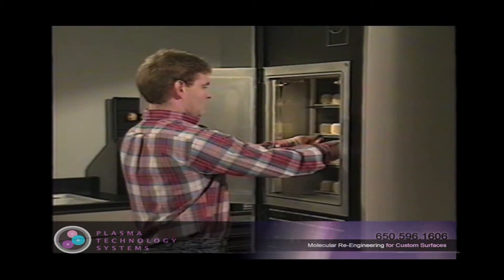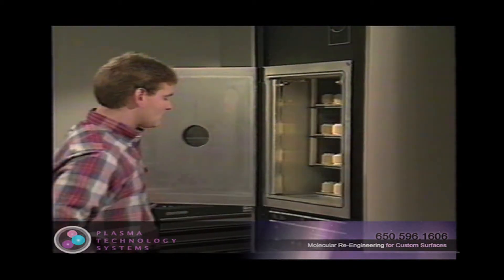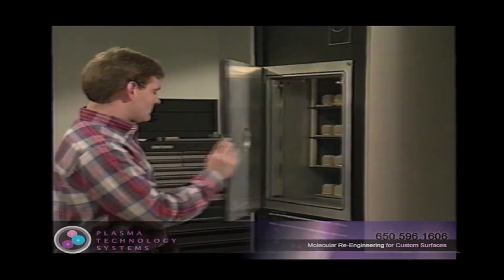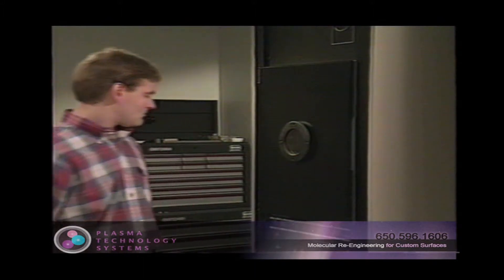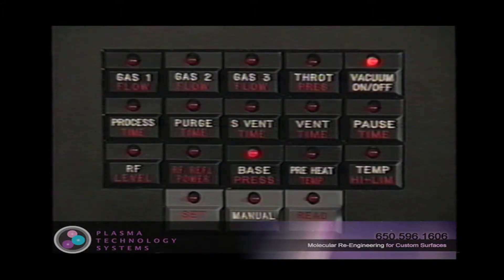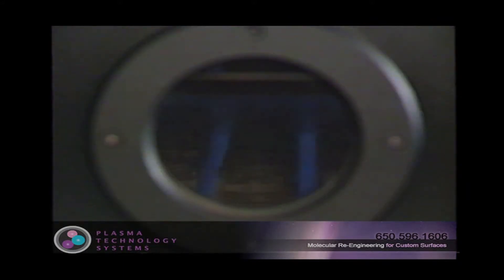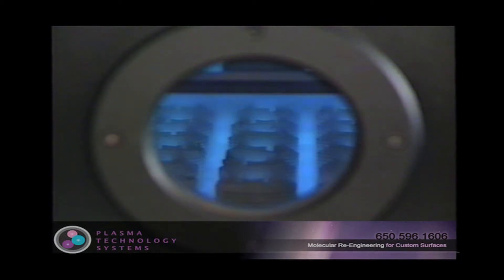The plasma treatment process is conducted in a vacuum chamber at reduced pressure. At this reduced pressure, the bulk temperature of the gas is typically only room temperature, or slightly higher. But the temperature of the active species — electrons and ions — may be as great as 25,000 degrees, obviously sufficient to cause chemical reactions to occur.